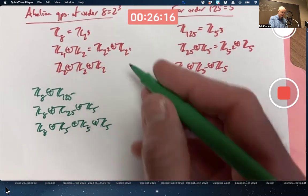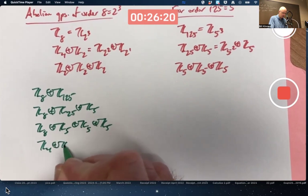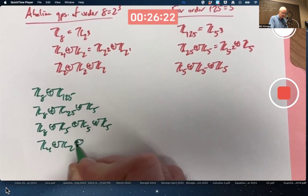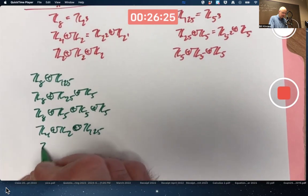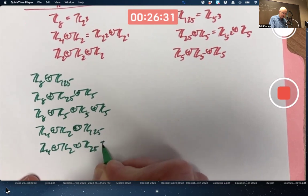Now move on to Z4 with Z2. Z4, Z2, Z125, Z25, Z4, Z2, Z25, Z5.